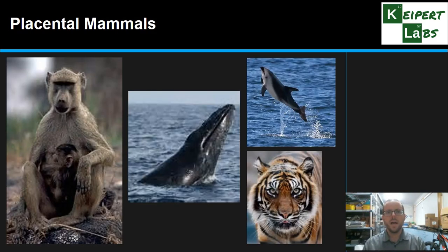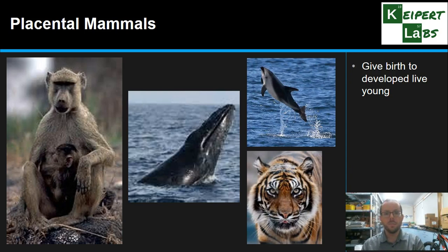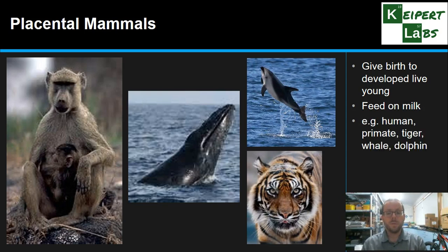There are three main groups of mammals. The first are placental mammals, which give birth to developed live babies. There is a placenta inside the uterus where the baby develops, and the young feed on milk from the mother. Humans, primates like baboons or gorillas, tigers, whales, and dolphins are all placental mammals. The baby is relatively developed at birth, though the level of development varies by species — a human baby is less developed than a baby tiger, for example.